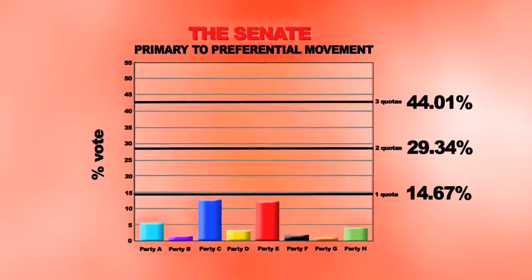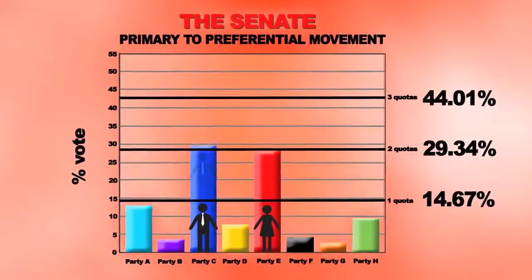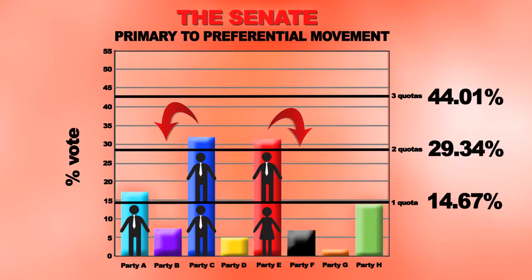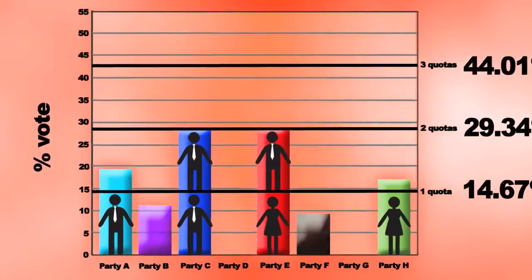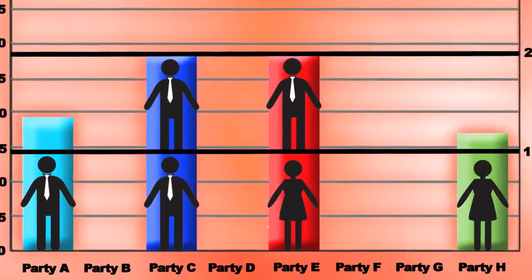Typically, neither of these parties have enough votes to gain the last Senate seat. So their remaining votes are divided between the minor parties, as it's not in either of their interests to preference each other. This is how a minor party picks up the final seat.